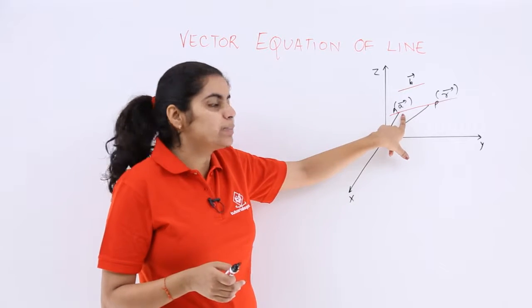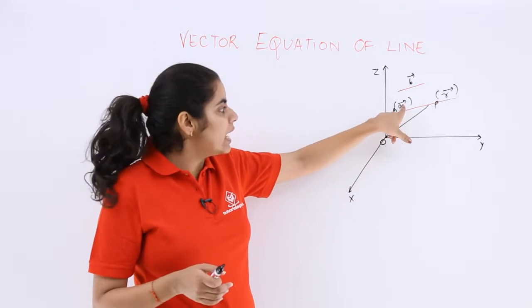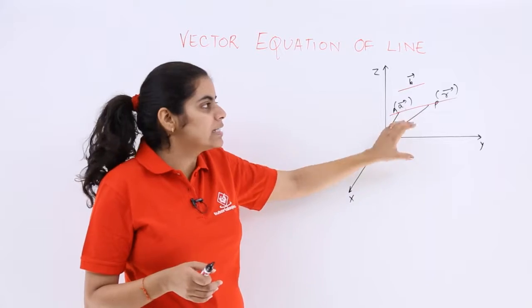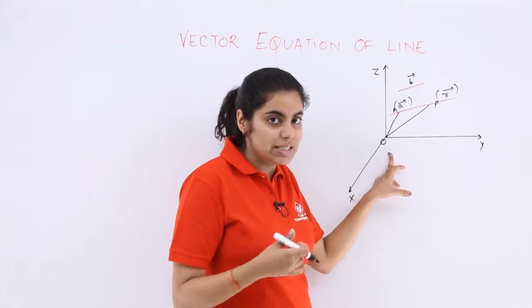We have a fixed point a with the position vector as a, so oa is given to you. Origin is obviously 0, 0, 0.